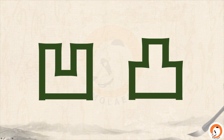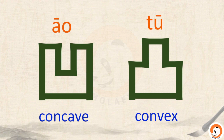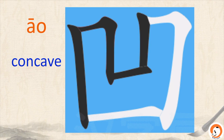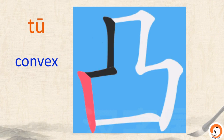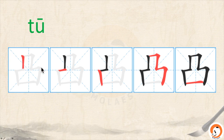Now let's look at these two characters — the shapes are the opposite. This one is 凹, and it means concave. And 凸 means convex. 凹, 凸. Let's see how to write 凹: 一, 二, 三, 四, 五 — five strokes. Let's practice together. And 凸: 一, 二, 三, 四, 五 — five strokes. 凸.